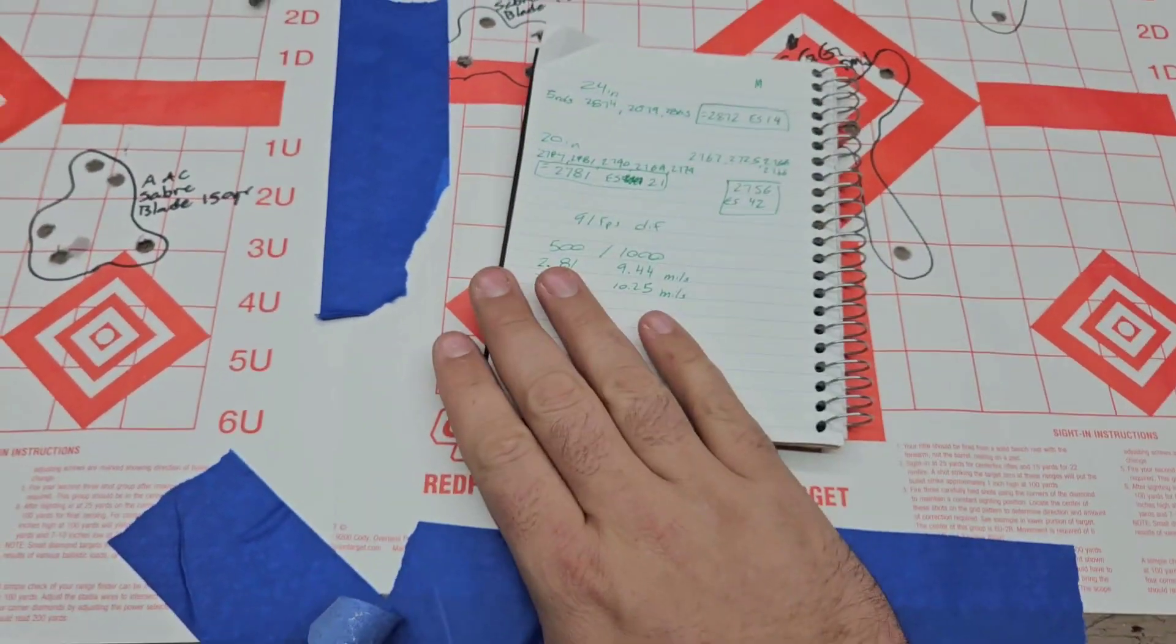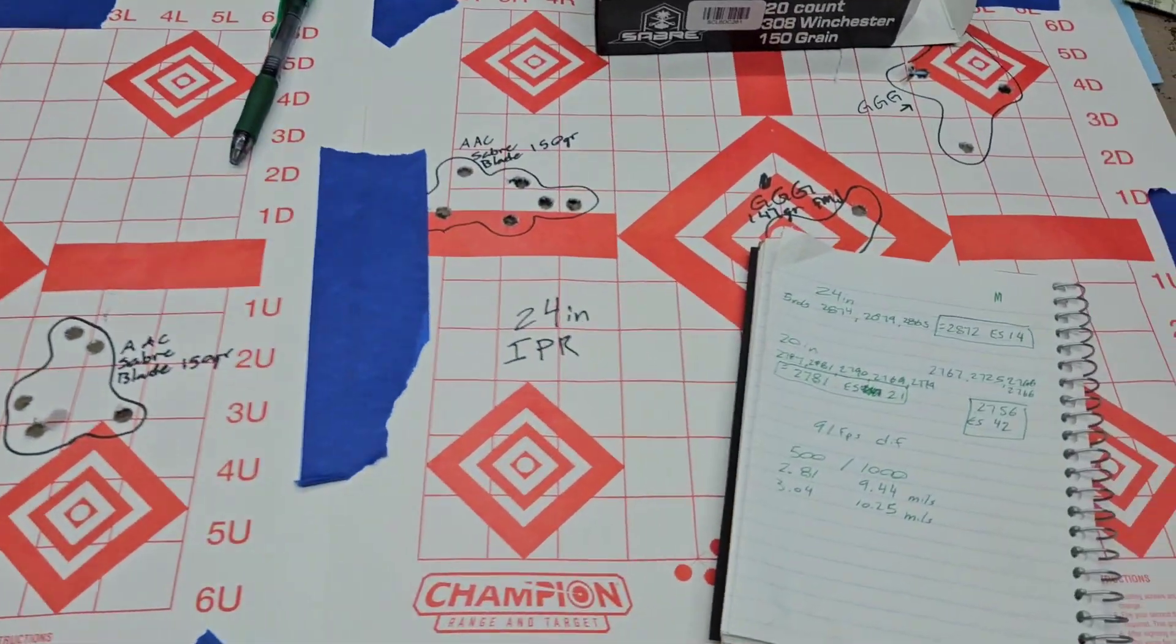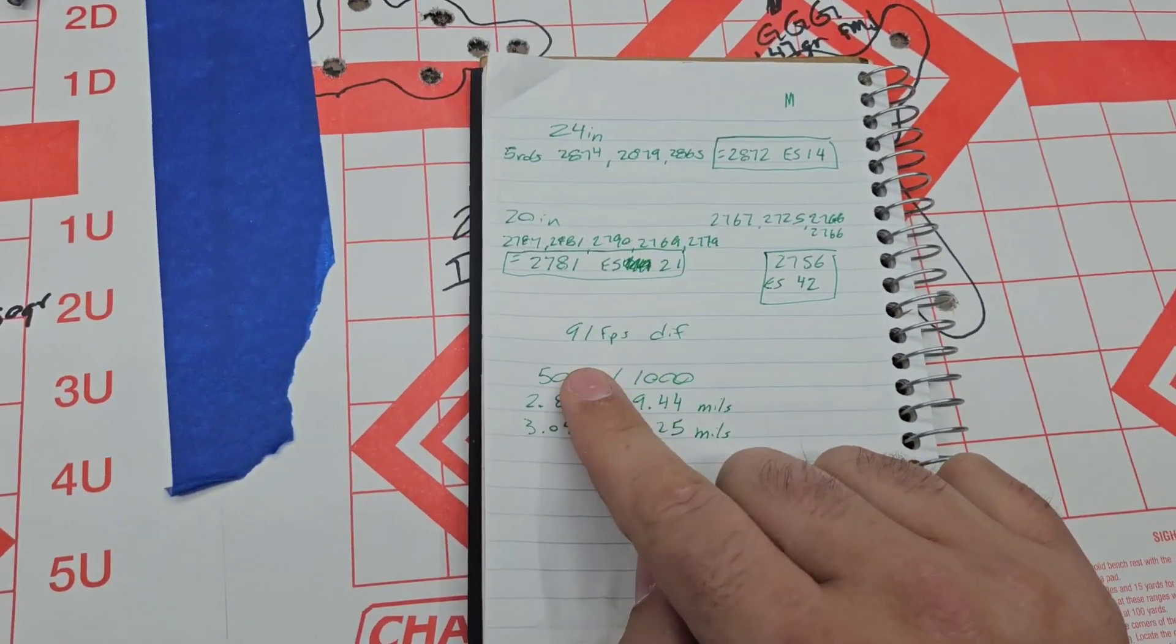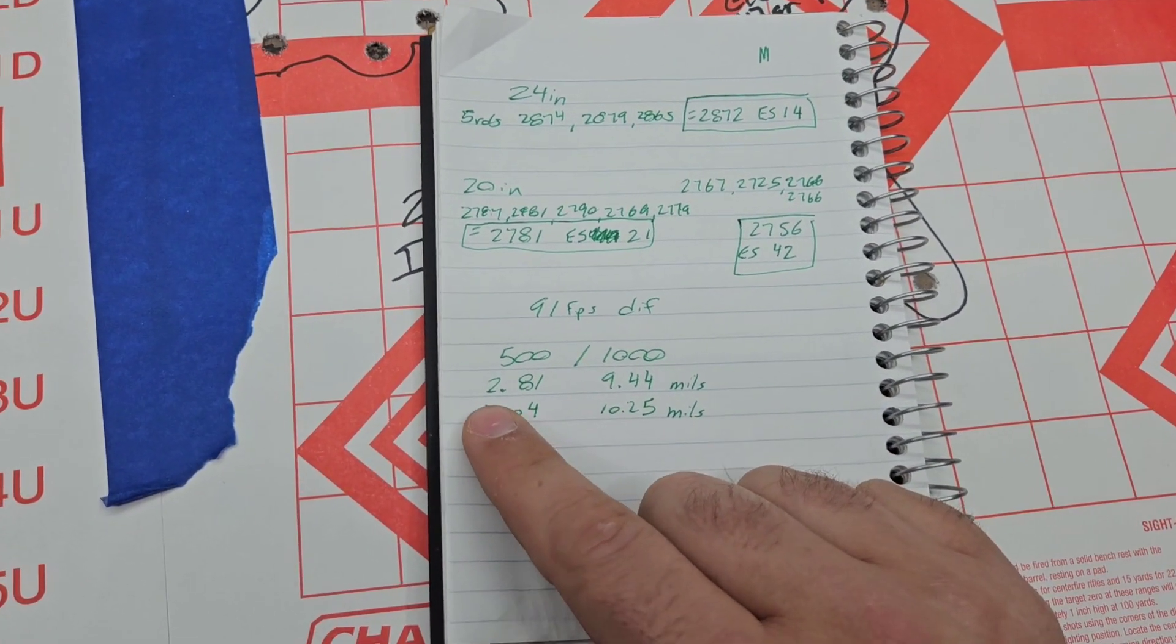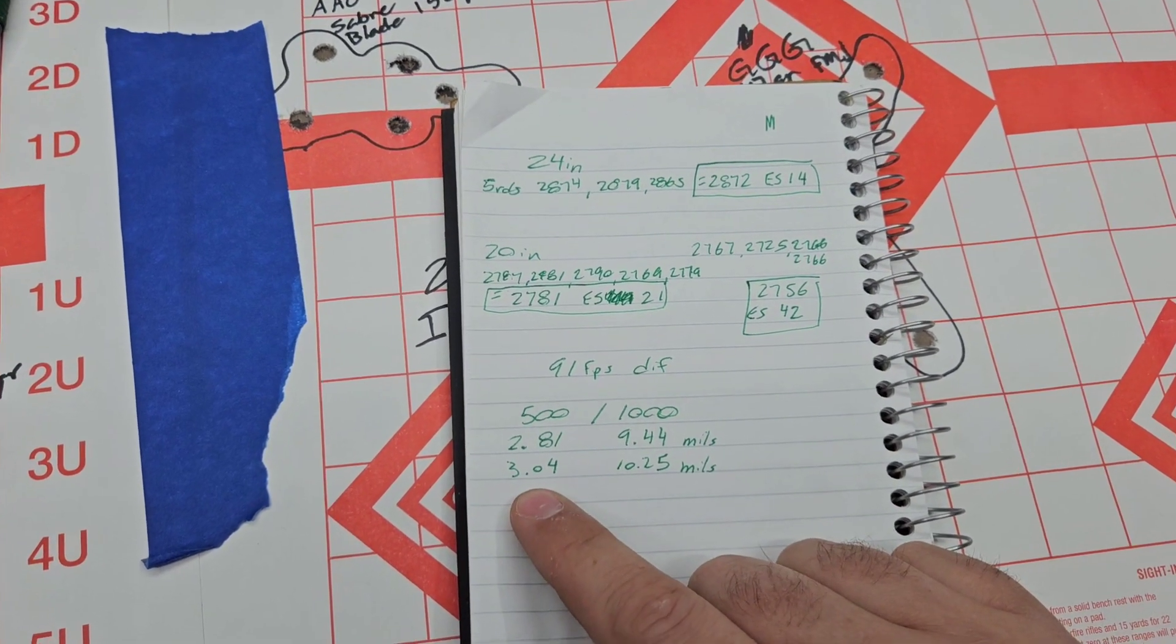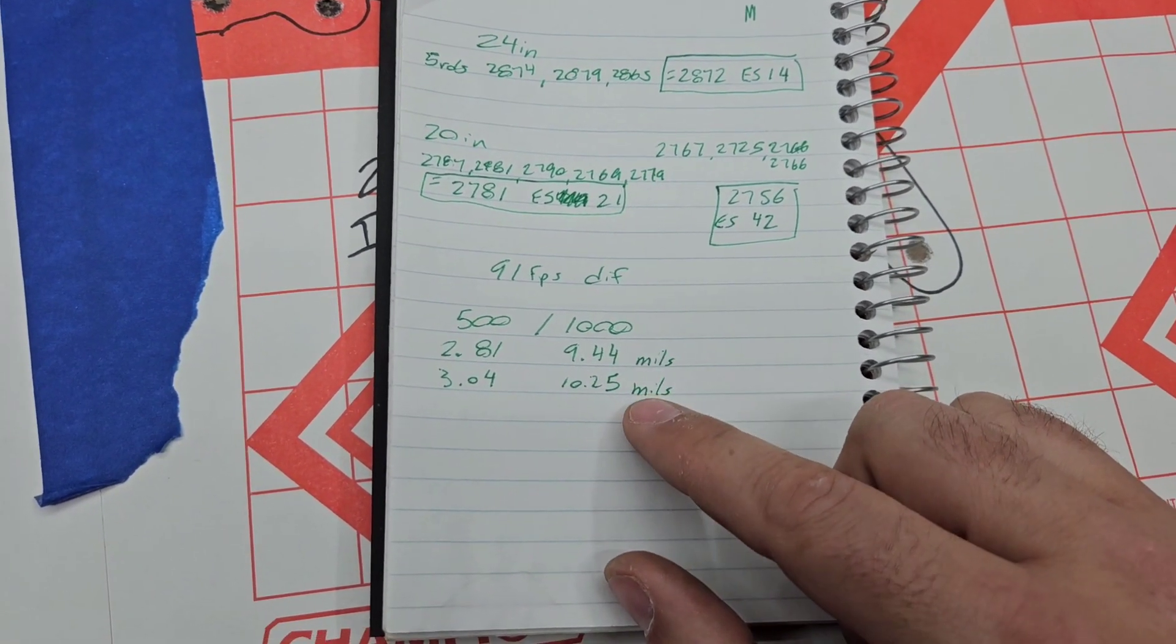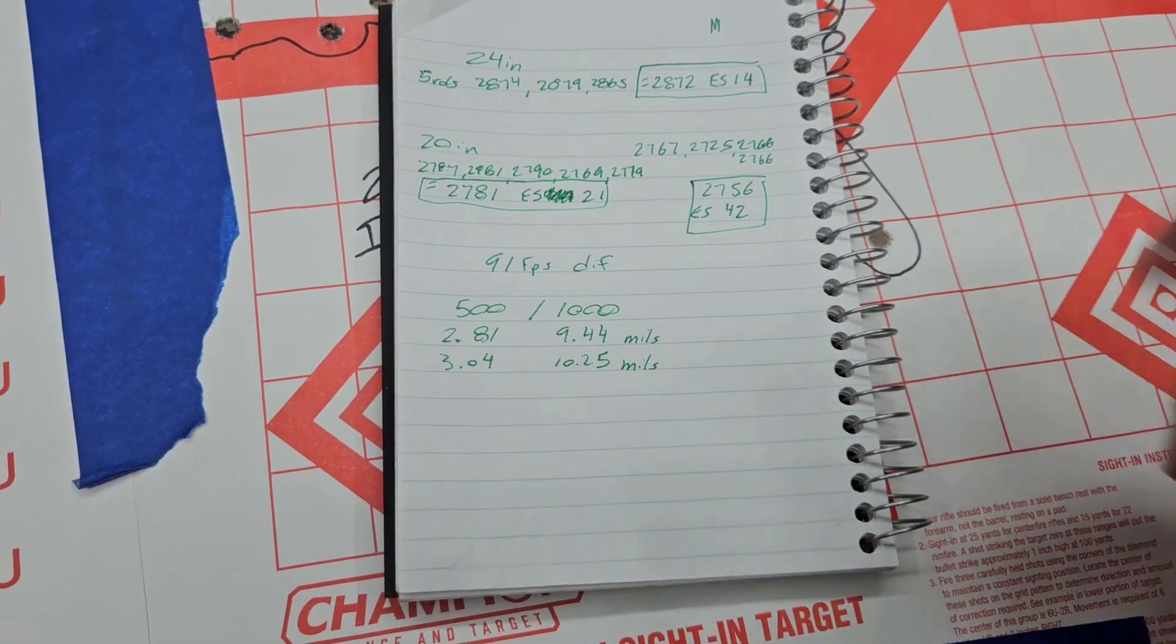I mentioned earlier, what difference does it make to have a 24 or a 20-inch barrel out of this particular ammo on a 308? So I crunched those numbers too. We're looking at a 91 feet per second difference between the two. At 500 yards, the 24 is dropping 2.8 mils. At 500 with the 20-inch, we're dropping 3.04. At 1,000, we've got 9.44 and 10.25. So not a huge difference.